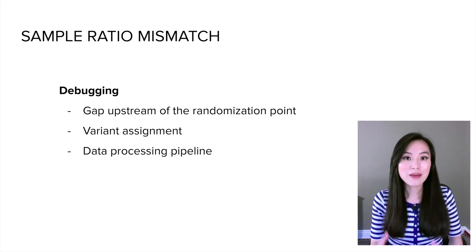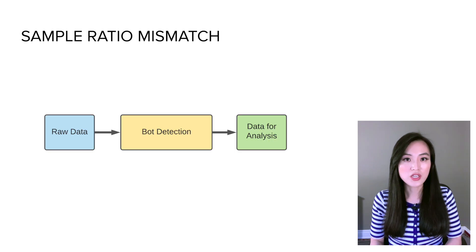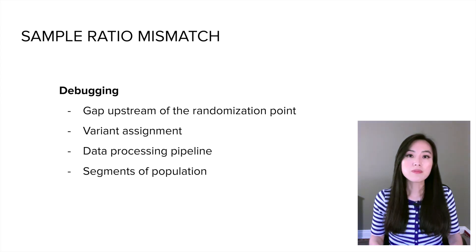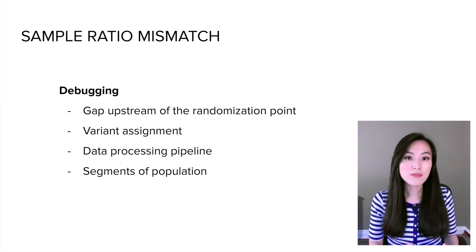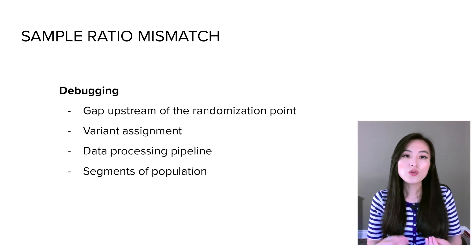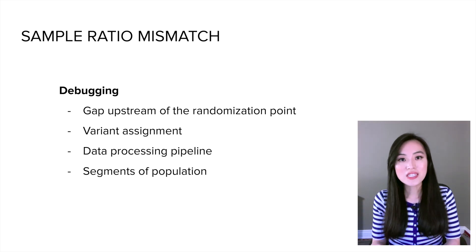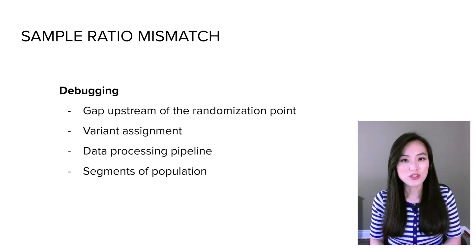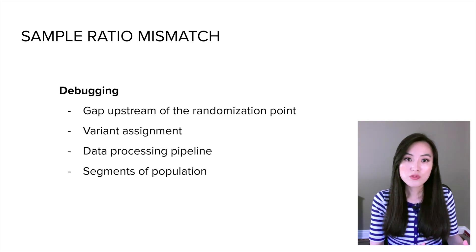We could also look into the data processing pipeline. A common source of sample ratio mismatch is bot detection and filtering — if any bug is introduced in filtering bot traffic, it will potentially cause sample ratio mismatch. To further debug the issue, we can check different segments of the population: for example, look at ratios per day to see which days have anomalies, or segment by other dimensions such as new users versus returning users.